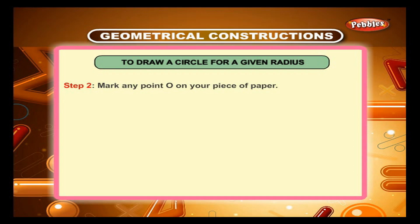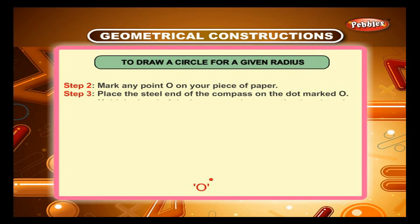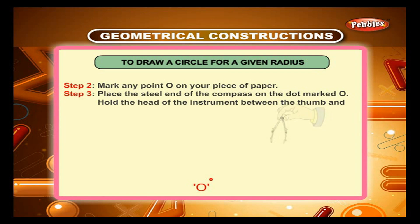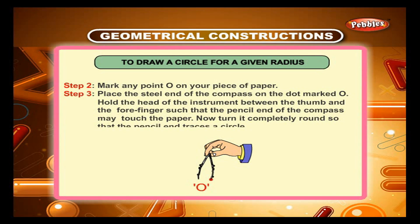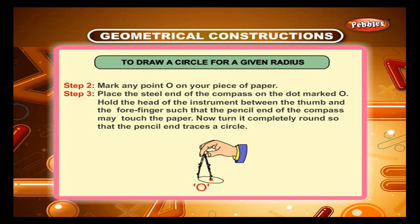Step 2: Mark any point O on your piece of paper. Step 3: Place the steel end of the compass on the dot marked O. Hold the head of the instrument between the thumb and the forefinger such that the pencil end of the compass may touch the paper. Now turn it completely round so that the pencil end traces a circle.